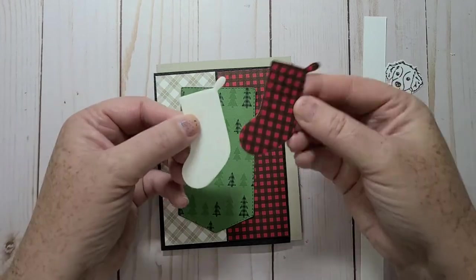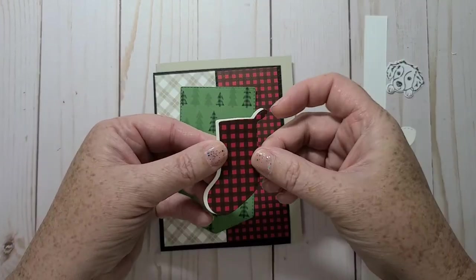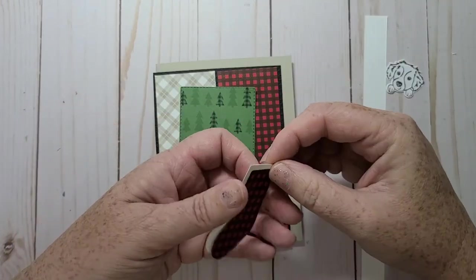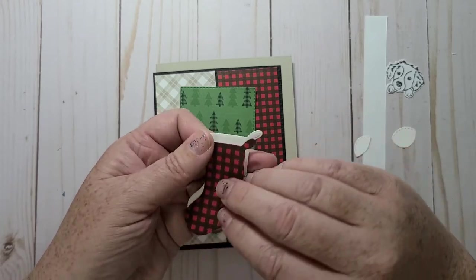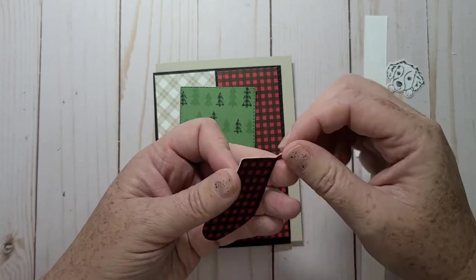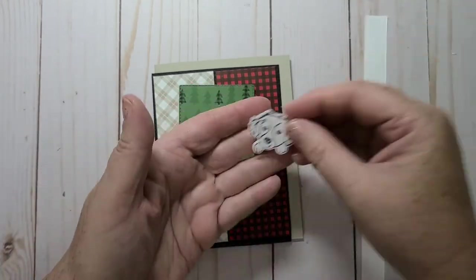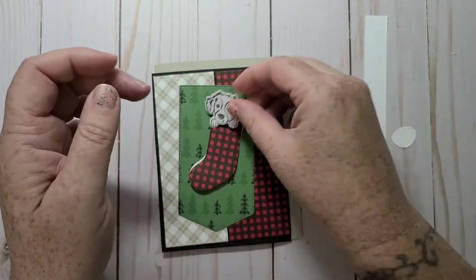Then I took Basic White and the DSP and I cut the stocking. I'm just going to layer this up because I'm going to pop up my sock, and then I just stamped and die cut out the little puppy dog.